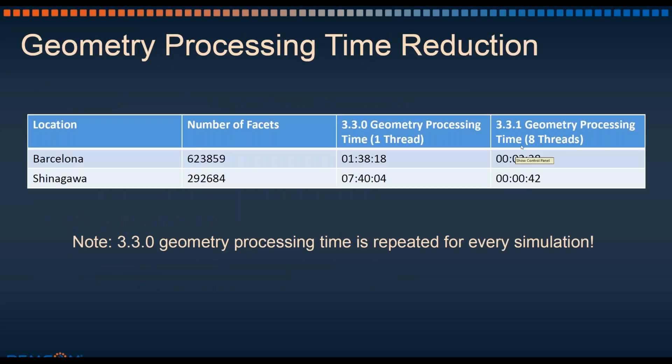For some examples of these runtime improvements, we've done some in-house testing. Barcelona, Spain is some geometry we have in a project that is approximately 624,000 faces. Previously, in 3.3.0, running on a single thread, it took an hour and 38 minutes to process the geometry. In 3.3.1, on 8 threads, it takes 2 minutes and 38 seconds.